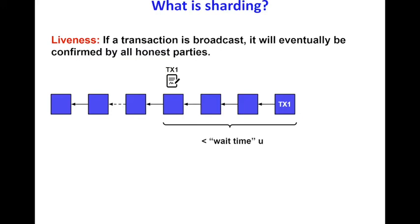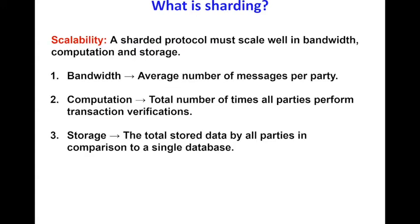Similarly to traditional blockchains, we also require that the sharded ledger must make progress. This is expressed through the liveness property, which states that if a transaction is broadcast, it will eventually be confirmed by all honest parties. The last property we define and require is scalability, which is a performance property and is at the core of what a sharded system is. Scalability encapsulates the speedup of a sharded blockchain system compared to a non-sharded blockchain system. We require that the sharded system must scale in three dimensions: bandwidth, computation, and storage.